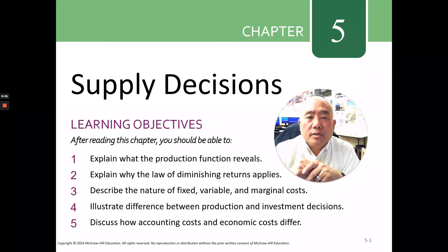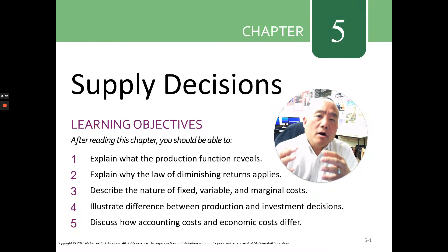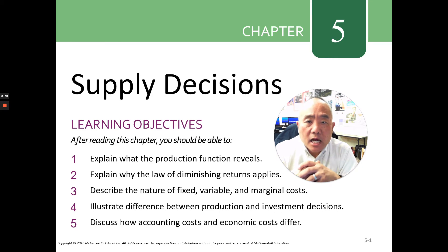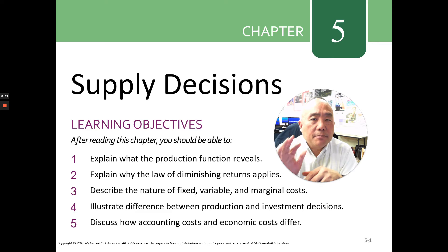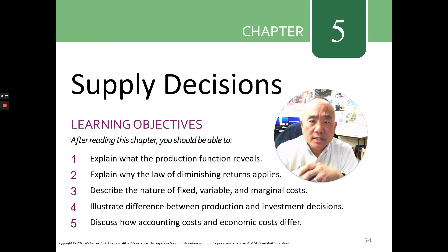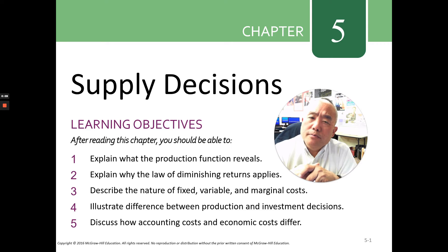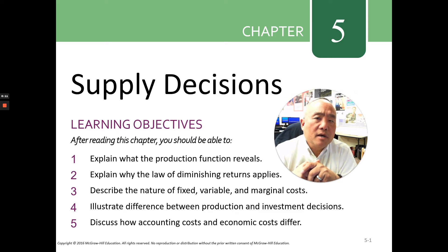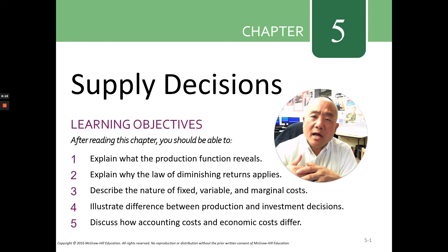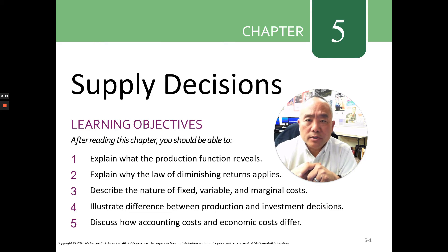Hi students, this is Mr. Liu, and today we are talking economics, specifically Chapter 5, Supply Decisions. How do business people make decisions about how much to supply or how much to produce?